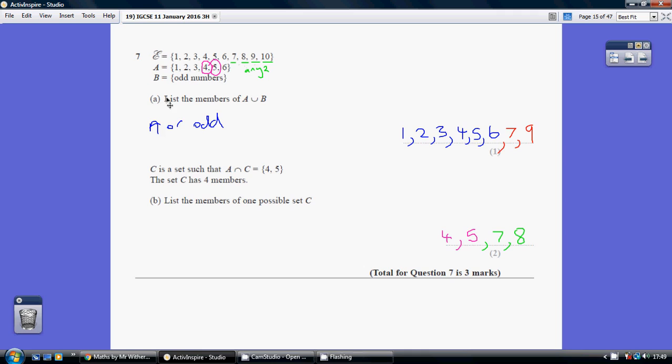Well, we've also got 7 and 9. So our answer for part A is 1, 2, 3, 4, 5, 6, 7, and 9. These numbers are either in A or they are in B.